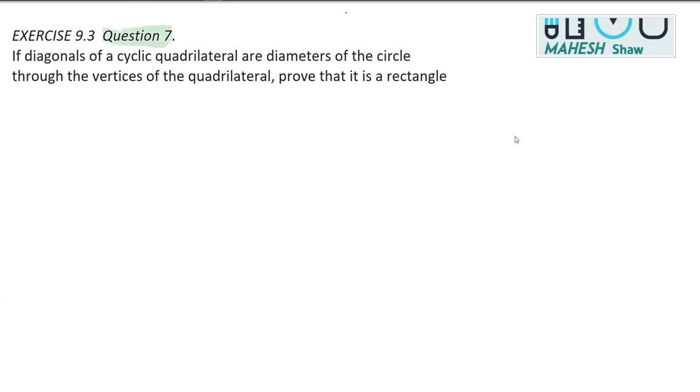We are now on question number 7, exercise 9.3, class 9th, chapter circle. In this question, it says that the diagonals of a cyclic quadrilateral are diameters of the circle through the vertices of the quadrilateral. We have to prove this is a rectangle.